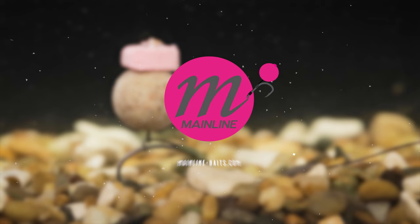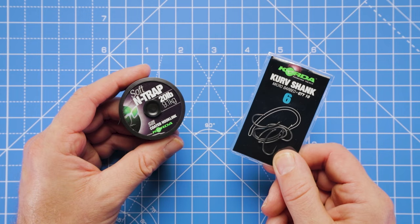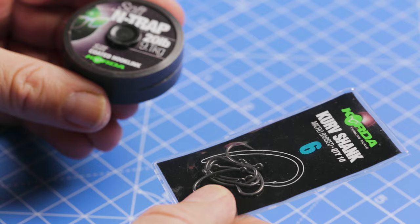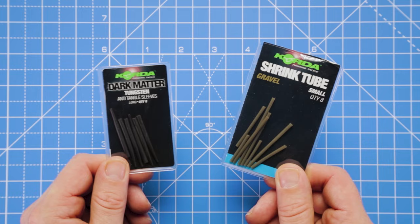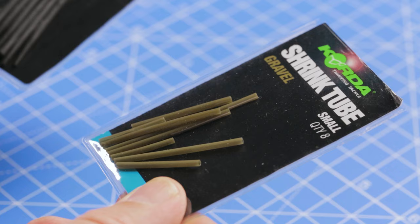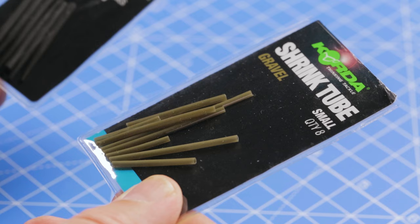Sounds good, so let's get started. I'm going to be tying this rig with a size 6 curve shank hook and some coated braid. We'll also be incorporating an anti-tangle sleeve at one end of the rig along with a small piece of shrink tubing over the eye of the hook to form a kicker.